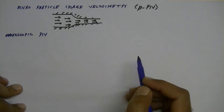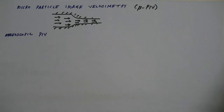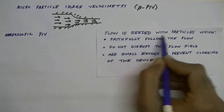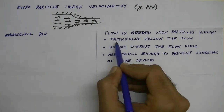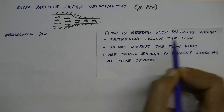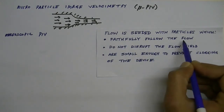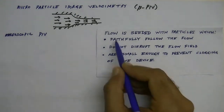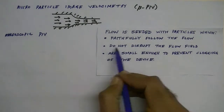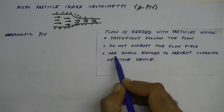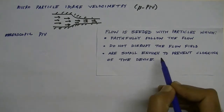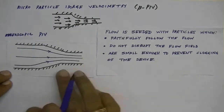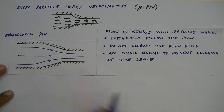In PIV we seed the flow with small particles such that the particles faithfully follow the flow. By tracking the motion of the particles we can estimate the flow velocity at that particular point. The particles should not disrupt the flow field — that is one of the requirements for the seeded particles. For micro PIV, you should not have large particles that would clog the device.